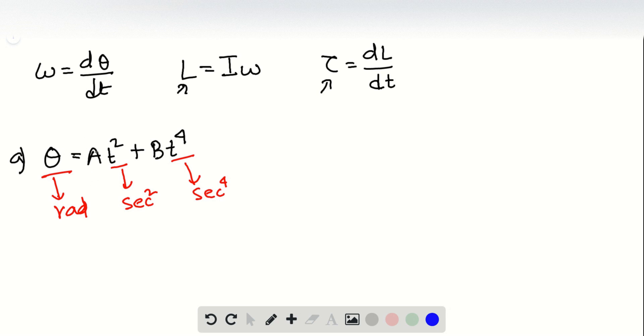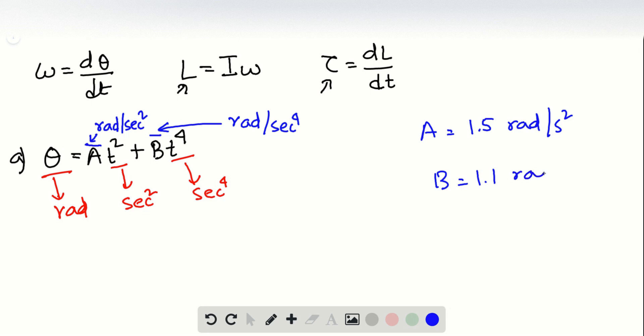If we do so, we see that for A they should have radians per second squared, so that this second squared gets canceled with this. And then for B, it's going to be radians per second to the power 4. So that means A will be 1.5 radians per second squared and B will be 1.1 radians per second to the power 4.